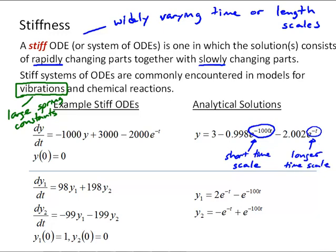Here's another example of a system of differential equations. This is even less obvious that it's a stiff system by looking at the differential equations themselves, but again it comes when we look at the solution. And here again we see exponents with a longer time scale, that same exponent negative 1 times t, and then a shorter time scale, negative 100 times t in this case.